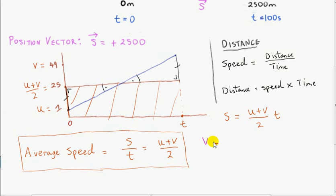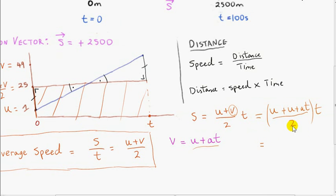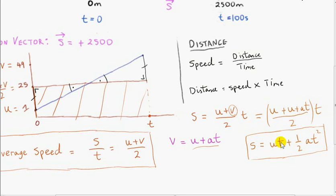We know from the previous video that v equals u plus at, where a is the acceleration of the car — the slope of the line. That means we can get a different formula for the distance s that does not involve v. We replace v in the formula with u plus at, giving us 2u over 2 times t, which is ut, plus at times t over 2, which is one half at squared. So the distance is s equals ut plus one half at squared — a very useful formula once we know the initial velocity u, the time taken t, and the acceleration a.